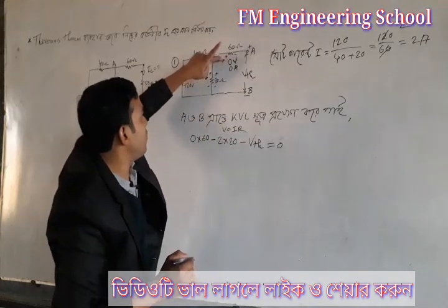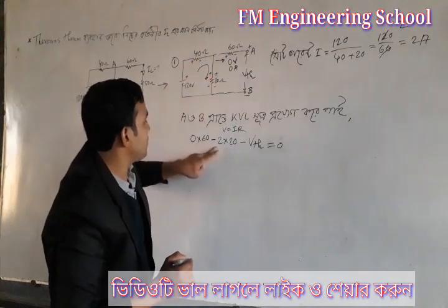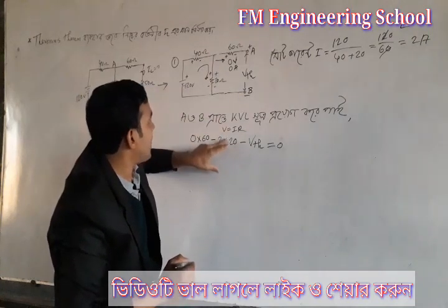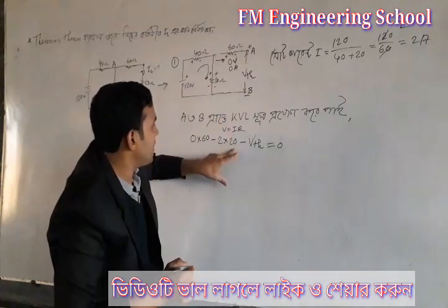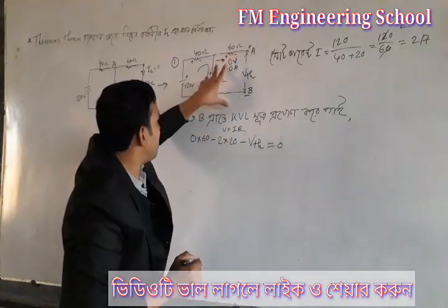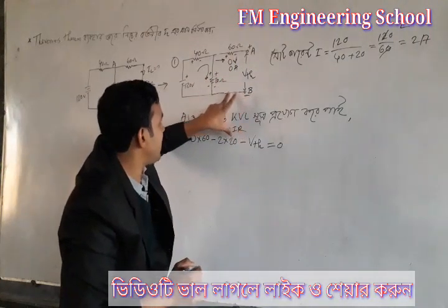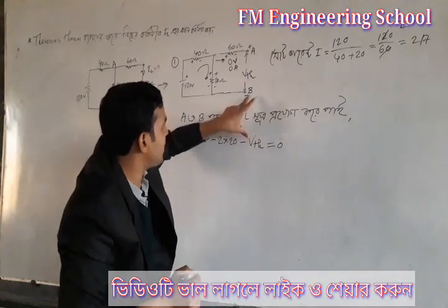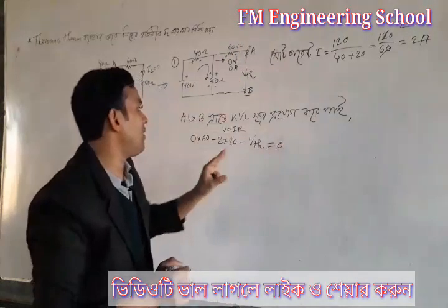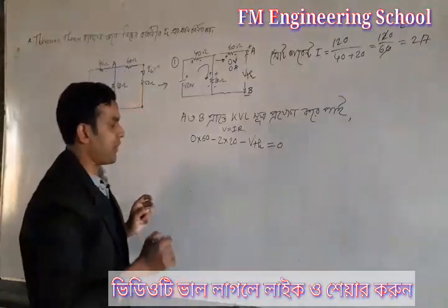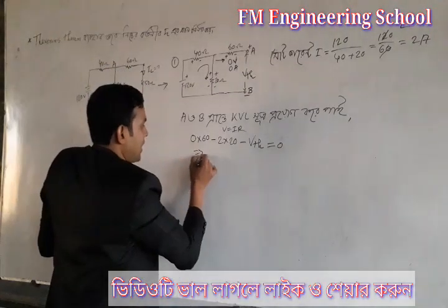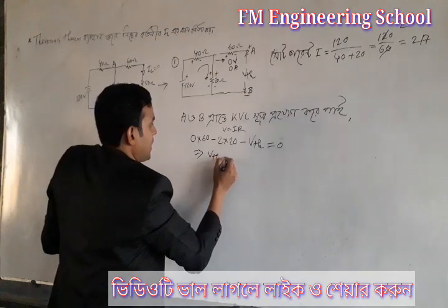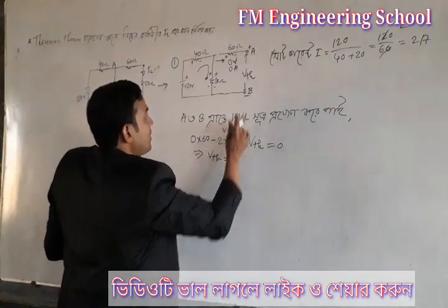If we look at the current factor, in return we will analyze the values. If we look at this activity, this rate will be 0. So we have to calculate the VTH. So we have to calculate the VTH.